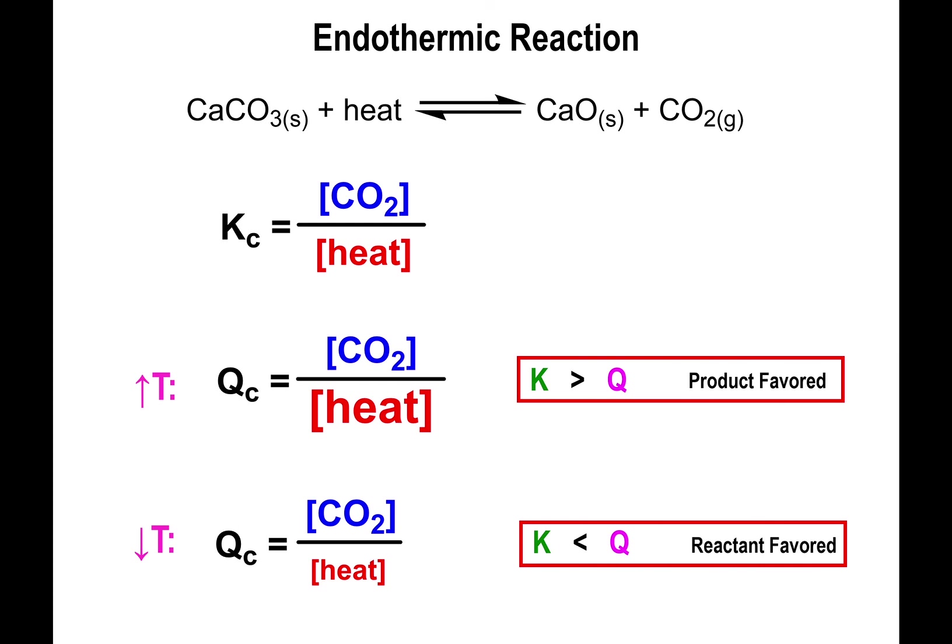Treat heat as a product or reactant depending on reaction type. If the reaction is endothermic, heat is on the reactant side; if exothermic, heat is on the product side. Increasing temperature means adding heat; decreasing temperature means removing heat. This makes temperature changes no different conceptually from adding or removing products or reactants.